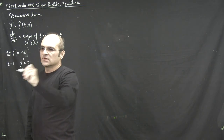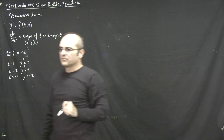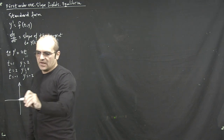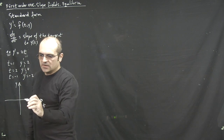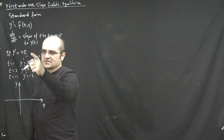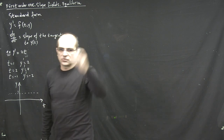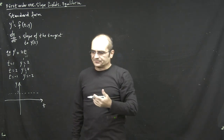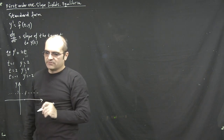Since the right-hand side doesn't depend on y, we can find values of the slope by plugging in different values of t. For example, if t equals 1, the slope is 2; if t equals 2, the slope is 4; if t equals minus 1, the slope is minus 2, and so on. We can sketch these slopes as small tangent segments. Because y' doesn't depend on y, the slopes will be the same as you look from top to bottom.